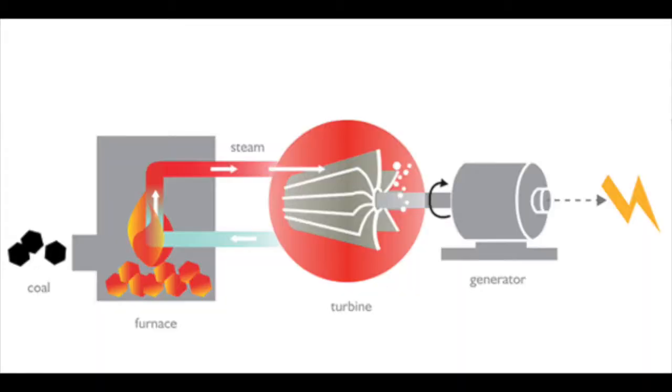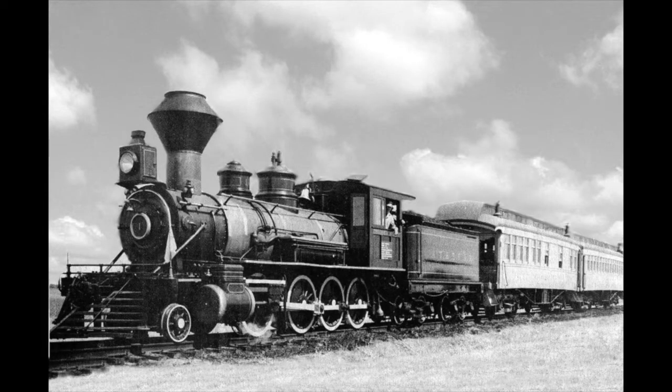Coal is burned, it heats up water, that water boils and produces steam, and the steam turns a turbine. So areas that had coal were really ripe for the Industrial Revolution. Transportation completely changes as well — while early on people relied on canals or small rivers to move things, now with steel, iron, and coal we could build railroads, lay down steel track, and move products anywhere. You didn't have to rely on rivers or canals.